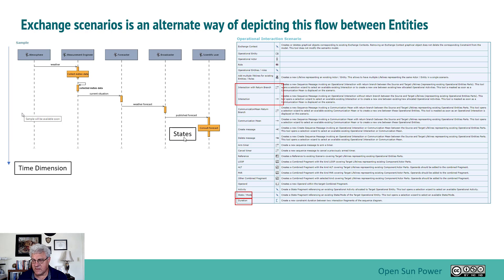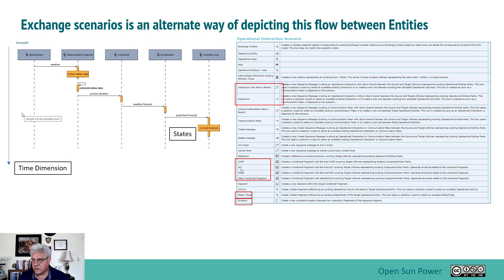You can also depict states — another advanced topic is state transition diagrams, and you can use states from those diagrams within this flow. For example, 'consult forecast' is a state of the scientific user as it goes through the operation. You can also add looping information, alternate paths, parallel processing, and other notations, enhancing the diagram beyond what you could do with a functional chain or operational process.